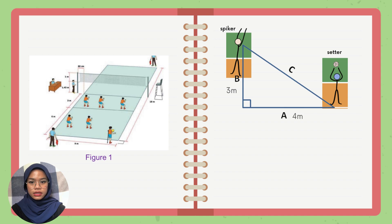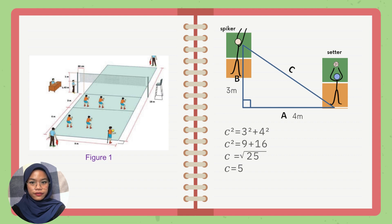Let's calculate. C squared equals 3 squared plus 4 squared. Solving the right side: C squared equals 9 plus 16. Bringing the square to the right side, C equals the square root of 25, and we get C equals 5. So the distance of the ball toss is 5m.